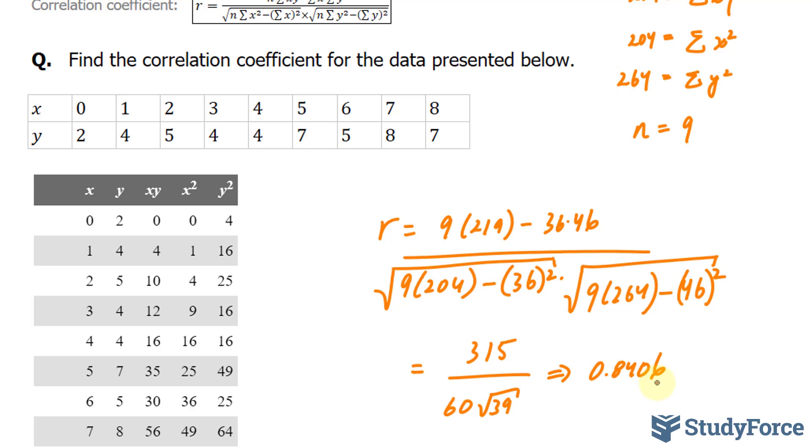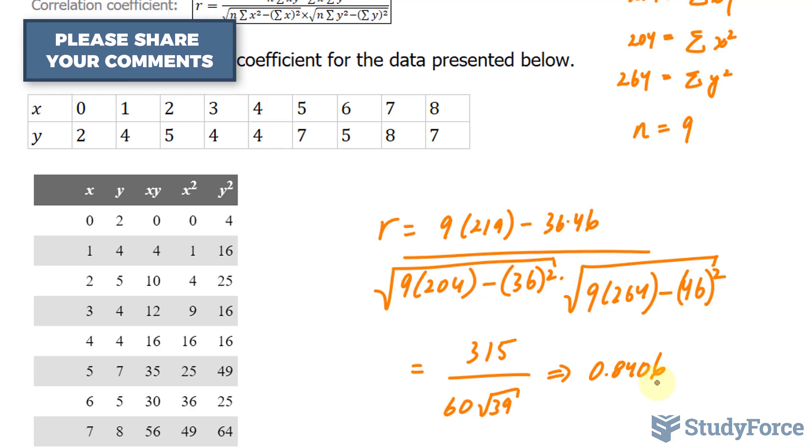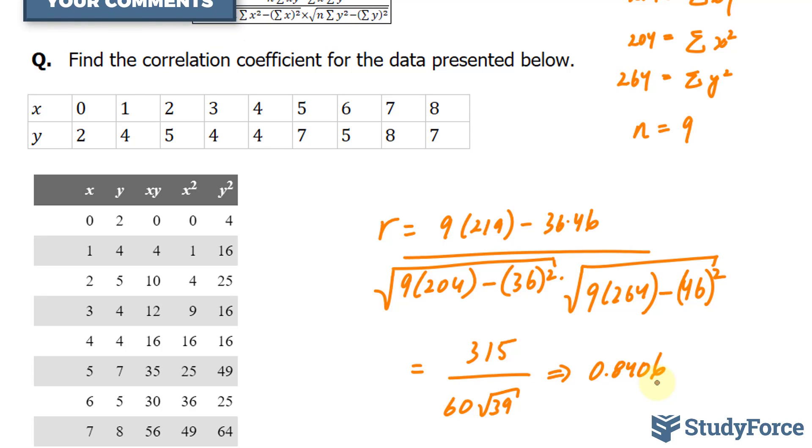0.8406. Let's analyze this number. As mentioned earlier, the correlation coefficient can vary from plus 1, which is a perfect positive correlation through 0, no correlation at all, all the way to negative 1, which is a perfect negative correlation.